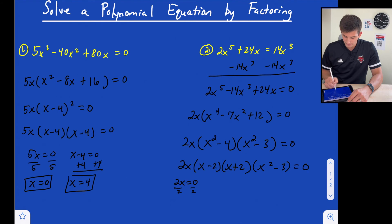So 2x equals zero, so we divide by 2, and we get x is equal to zero, so that's one. x minus 2 equals zero, so x equals 2. x plus 2 equals zero, so x equals negative 2. And now we say x squared minus 3 is equal to zero. We add the 3, so we get x squared equals 3, and now we need to take the square root.